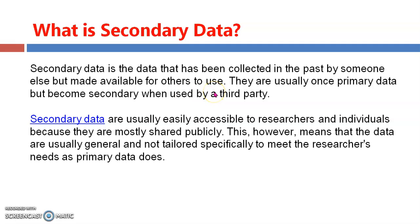Secondary data is data that someone else or another organization has already collected and published or recorded. Secondary data is usually easily accessible to the researcher and individuals because it is mostly shared publicly. However, this means the data is usually general and not tailored specifically to meet the researcher's needs as primary data does — it is shared publicly and available for anyone to use.